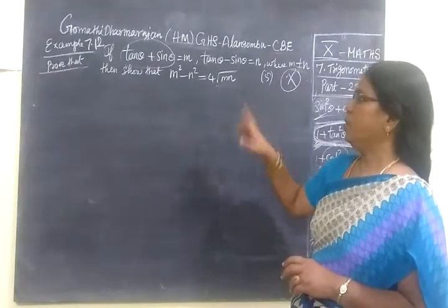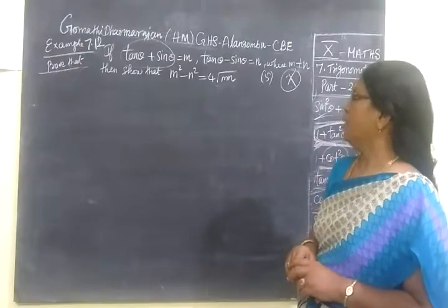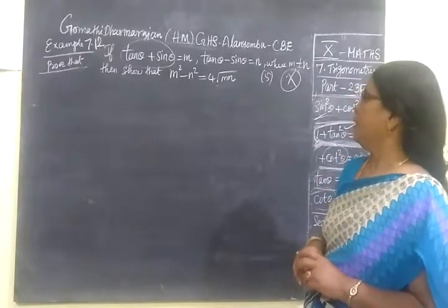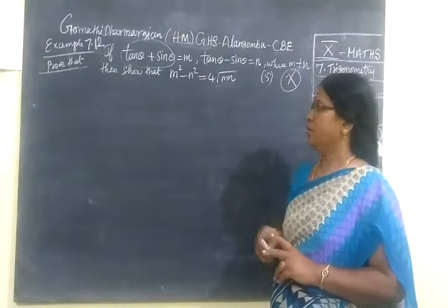So, this question is tan theta plus sin theta over value M, tan theta minus sin theta equal to N. And we have to prove LHS equal to RHS. This is our task.